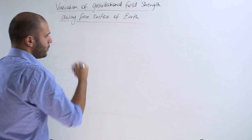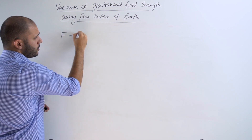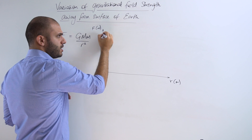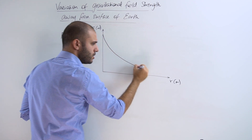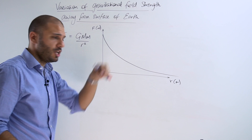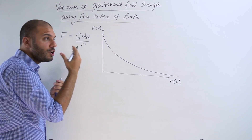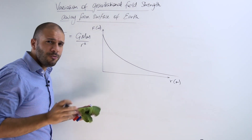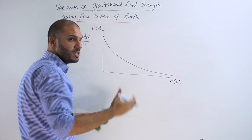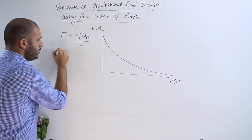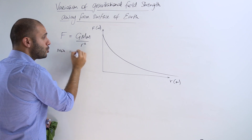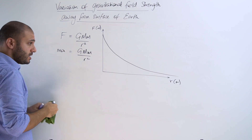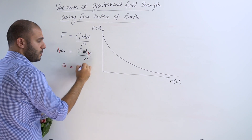We already said that due to the inverse square law within this equation, the force against distance experiences such a shape for a graph, such a decay. The acceleration — the gravitational field strength — is dependent on this force. If the force experiences such a decay, which is essentially an inverse square law, then since the acceleration is caused by such a force, it too will experience such a decay, an inverse square law.